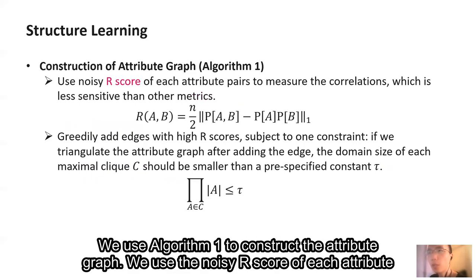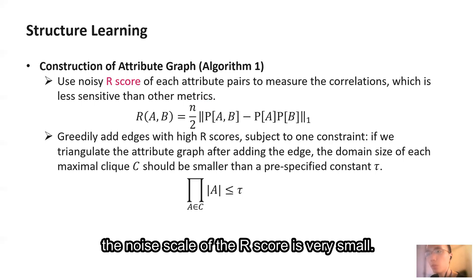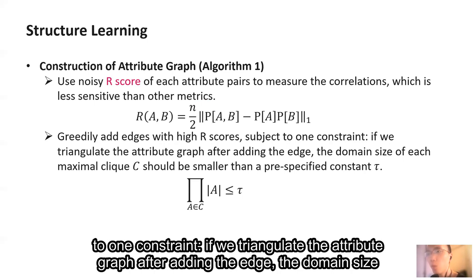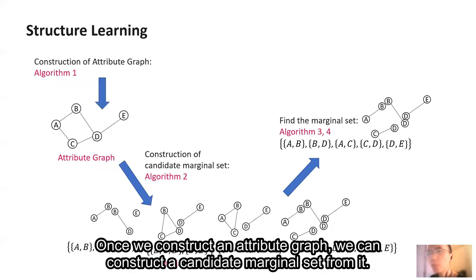We use Algorithm 1 to construct the attribute graph. We use the noisy R-score of each attribute pair to measure the correlations. It is less sensitive than other metrics, and therefore, the noise scale of the R-score is very small. The key idea is to greedily add edges to the attribute graph with high R-scores, subject to one constraint. If we triangulate the attribute graph after adding the edge, the domain size of each maximal clique should be smaller than a pre-specified constant.